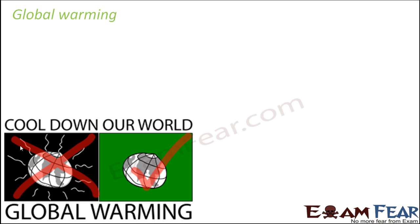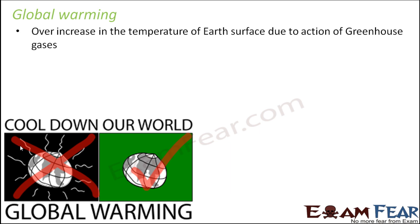As we all know, excess of anything is not good. If the concentration or amount of carbon dioxide or greenhouse gases starts increasing too much, then the greenhouse effect will also increase. So the temperature of the earth will increase too much, causing what we call global warming — an over-increase in the temperature of the earth's surface due to the action of greenhouse gases.